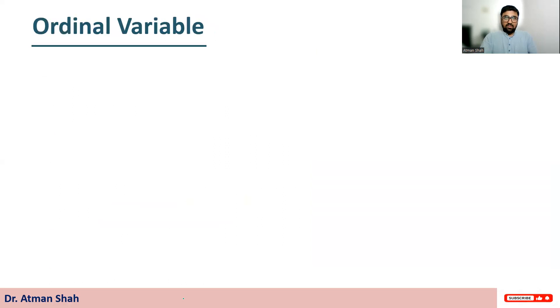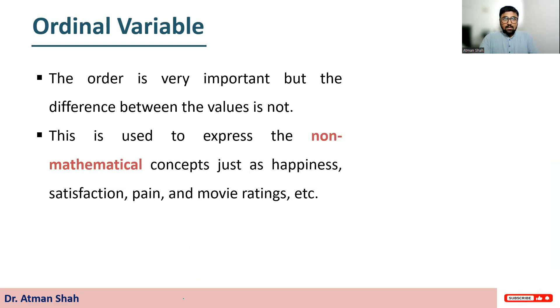Second is ordinal variable. Now here the order is very important, but the difference between the values is not. So this is used to express the non-mathematical concepts such as happiness, satisfaction, pain, movie ratings. So here these values can be added to or subtracted from.